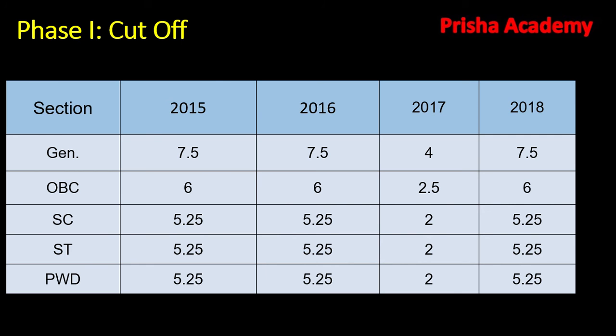In 2017, the cutoff for General was only 4, for OBC it was 2.5, and for SC/ST and PWD it was 2. After seeing these cutoffs, you can find out how tough this question paper is. Getting 4 or 7.5 marks out of 30 is not a difficult task, but it is your aptitude and how you attempt it that gets you those marks.